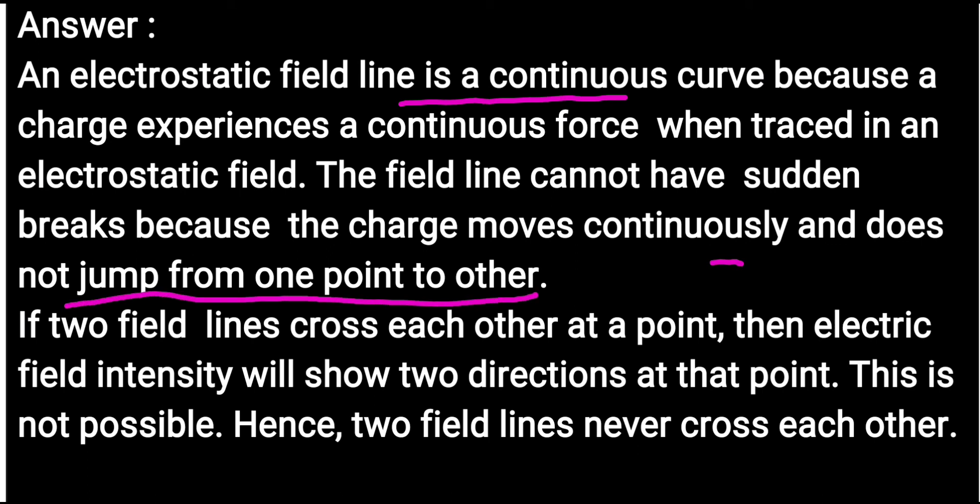Second part: If two field lines cross each other at a point, then electric field intensity will show two directions at that point. This is not possible, of course. Hence, two field lines never cross each other. Alright, so see you in the next question.